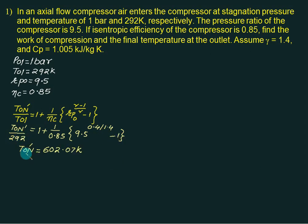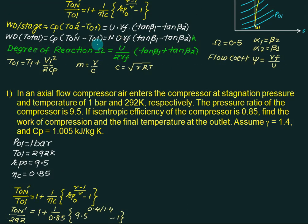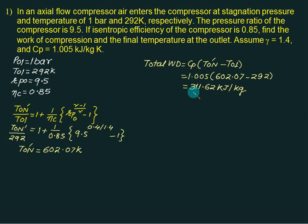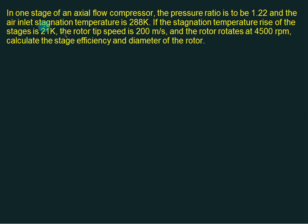Solving for T0n dash gives the actual temperature at the end of n stages as 602.07 K. The total work done is then cp × (T0n dash − T01) = 1.005 × (602.07 − 292), giving a total work done of 311.62 kJ/kg.